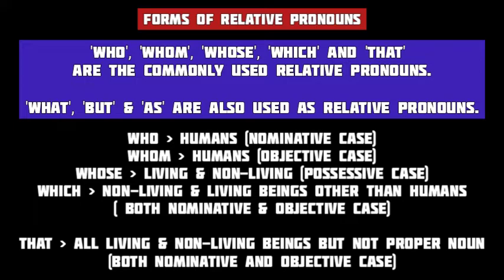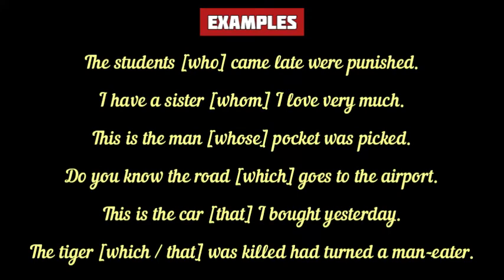The relative pronoun 'that' is used for all living and non-living beings, including human beings, but not if the antecedent is a proper noun or named person. 'That' can also be used both in the nominative and objective case. Now let's see some examples. In the first example, 'who' is the relative pronoun after the antecedent 'student.'